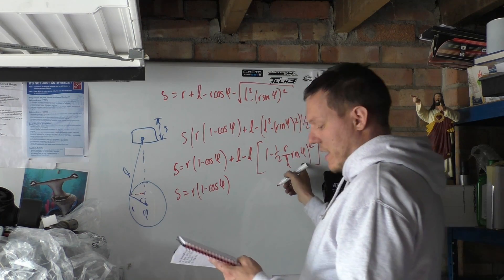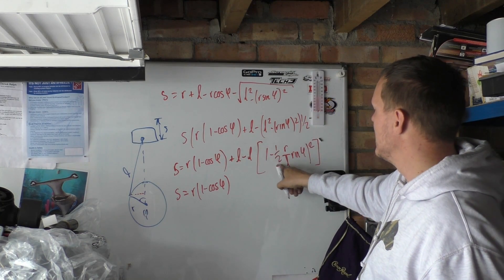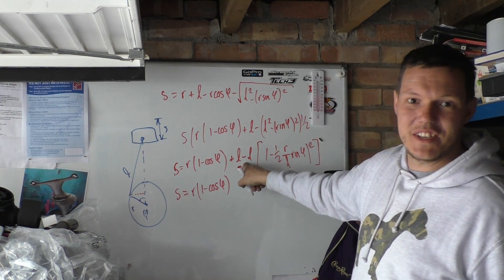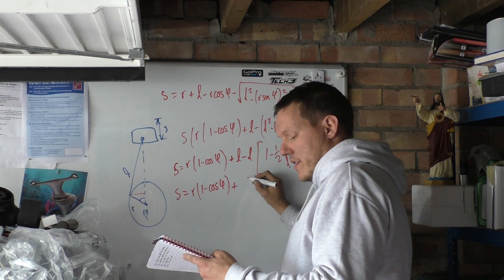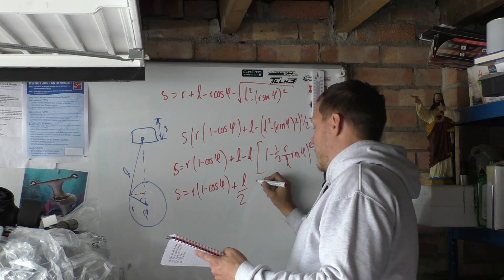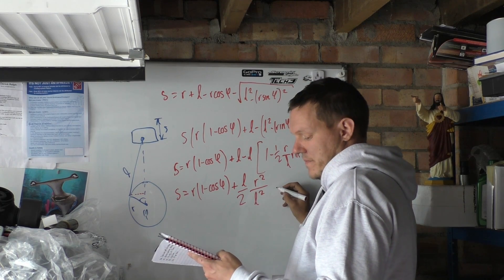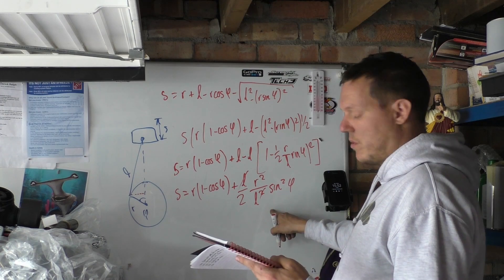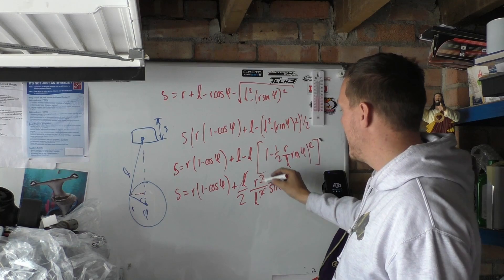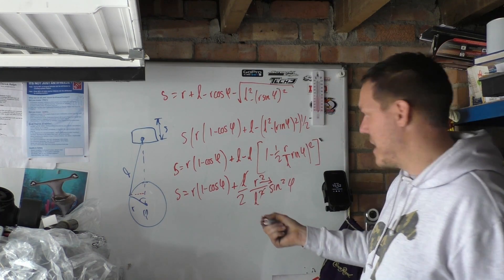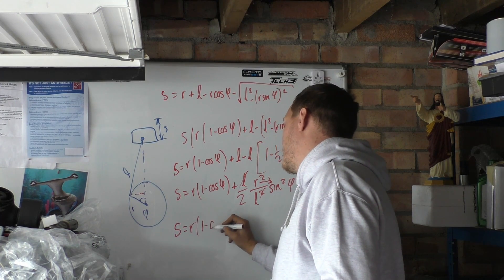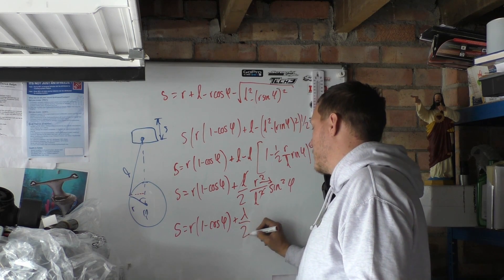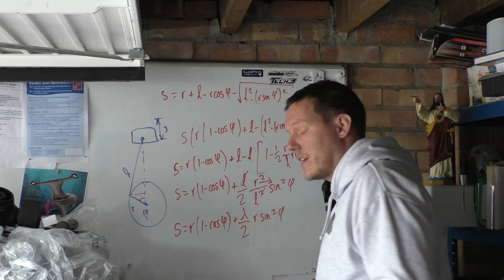What you end up with is you end up putting an L over two - cos you bring that over - and then you've got that times R squared over L squared, times sine squared phi, like that. Then obviously what you do is you cross that out, cross that out, and you shift your two over. So now all you've got really is you can shift this R up there - you've got an R left over - and R over L is your lambda, which is your crank angle. So you end up with your crank angle phi, plus your phi over two, times R sine squared phi. And bingo, you have it.